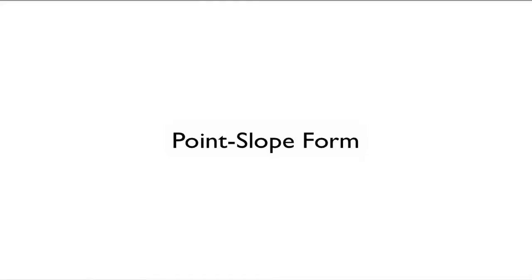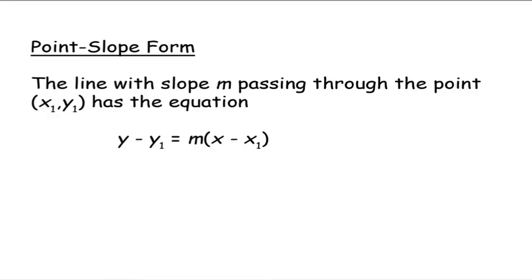All right, we've already discussed the slope-intercept form for the equation of a line, but there is a second form for the equation of a line called the point-slope. Its definition looks like the following.